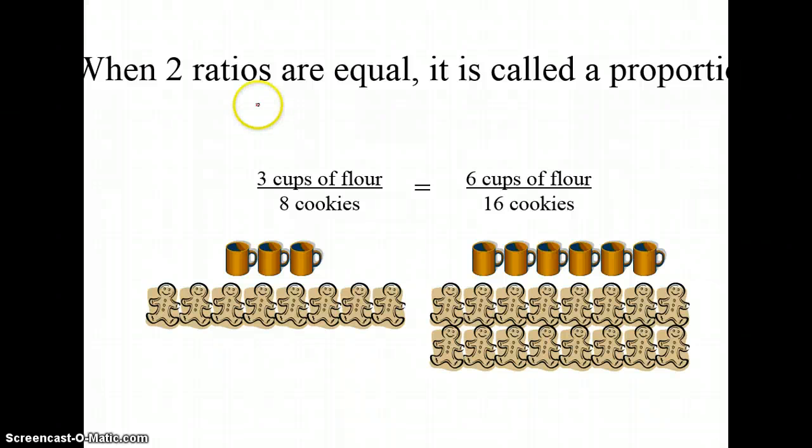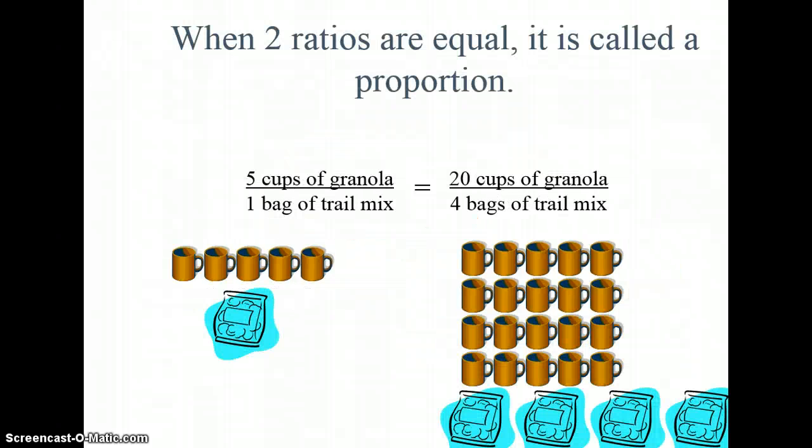So I can also check by saying, I can multiply 3 times 2 to get 6. Likewise, I can multiply 8 times 2 to get 16. That's just another way to tell if two ratios are equal. When two ratios are equal, it's called a proportion. Again, 5 times 4 is 20. Likewise, 1 times 4 is 4. So these two ratios are forming a proportion.